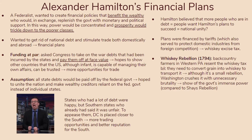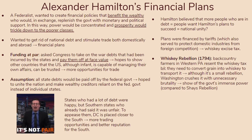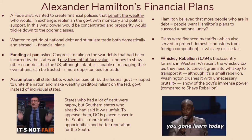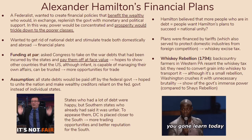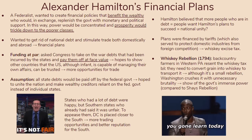The whiskey excise tax leads to the Whiskey Rebellion in 1794. Backcountry farmers in western Pennsylvania resented the tax because in order to transport grain, they had to convert it into whiskey. Although it was a relatively small rebellion, Washington crushed it with unnecessary brutality as a show of the government's immense power. Compare this to Shays' Rebellion, where the state militia of Massachusetts could barely control the rebels. The Whiskey Rebellion showed the government putting its foot down — making it clear they would not let mobocracy rule the nation.